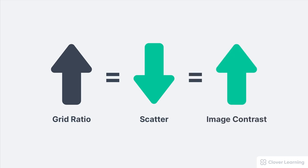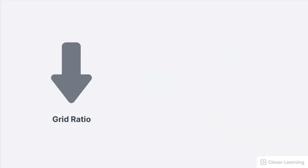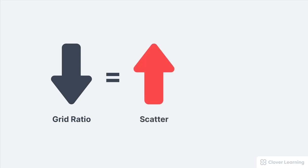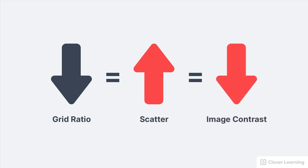The general relationship between grids and image contrast looks like this. If we increase the grid ratio, this decreases the amount of scatter reaching the image receptor and therefore increases the image contrast. The opposite is also true: if we decrease the grid ratio or don't use a grid, this will increase the amount of scatter reaching the image receptor and therefore decrease the image contrast. Anything that increases the amount of scatter getting to the receptor will always decrease the image contrast.